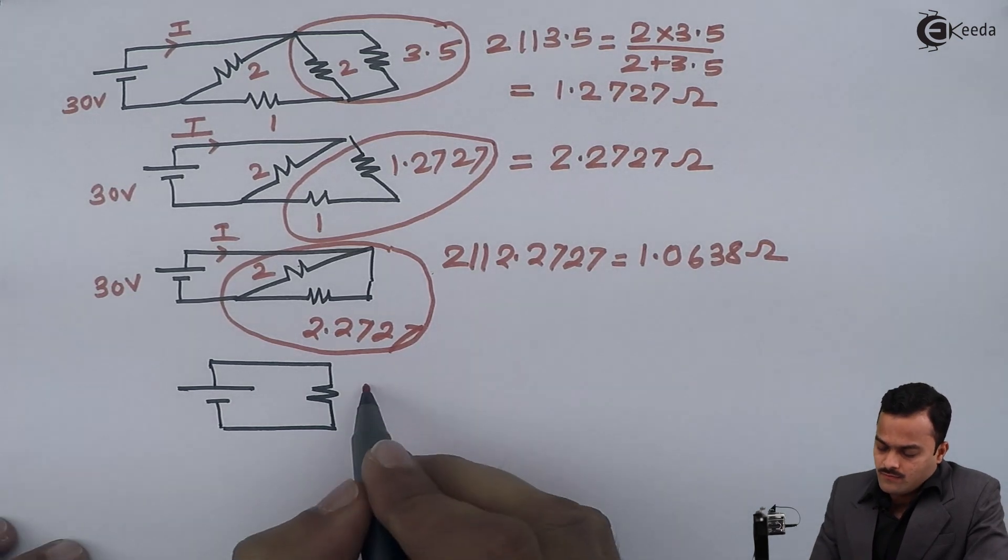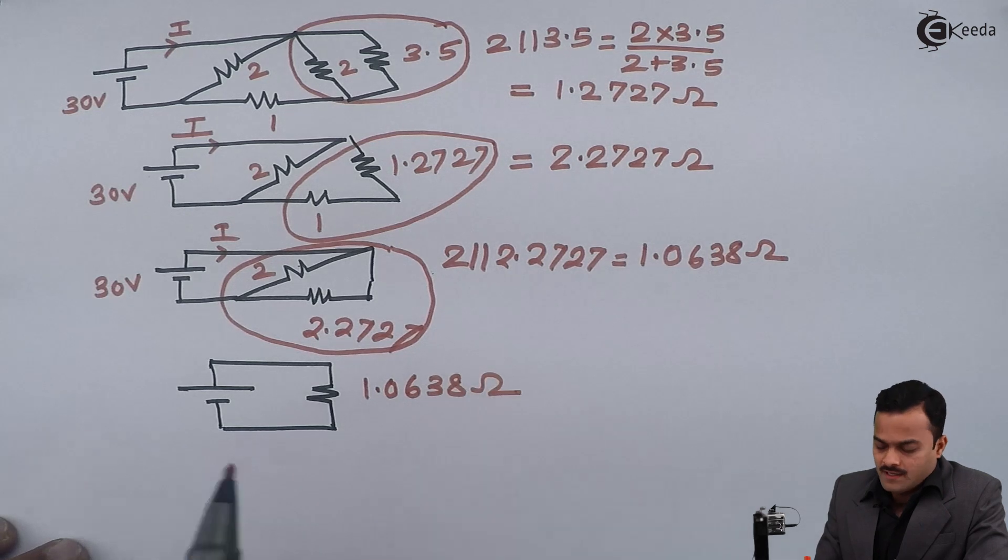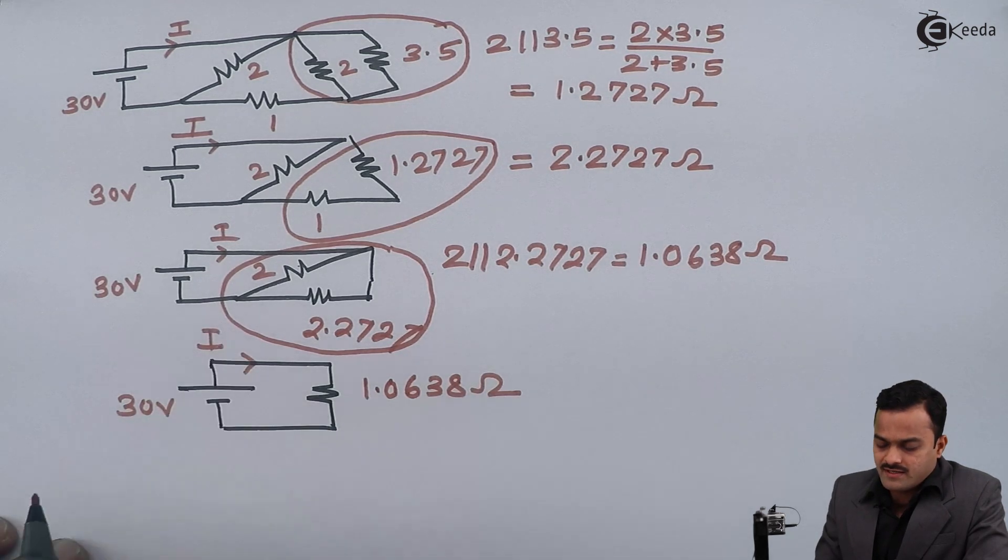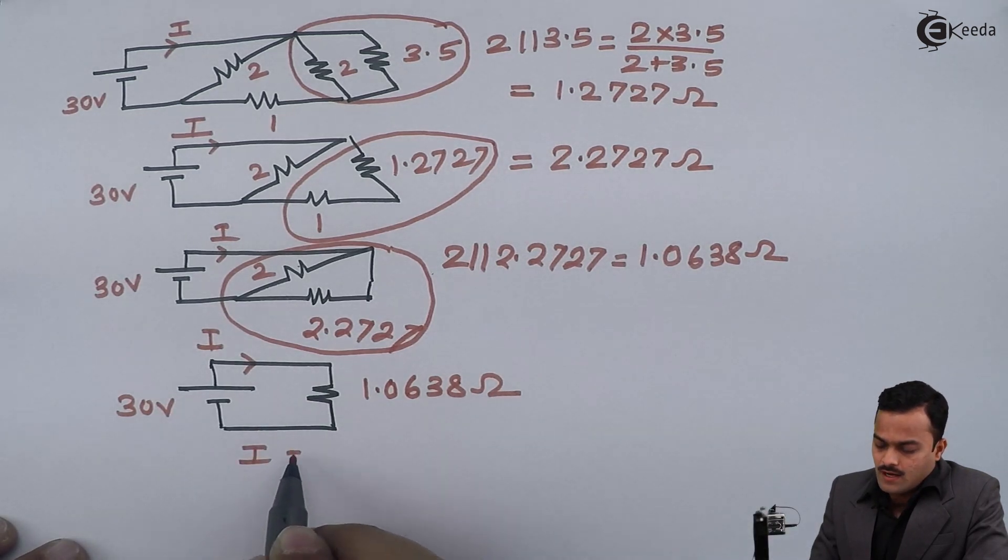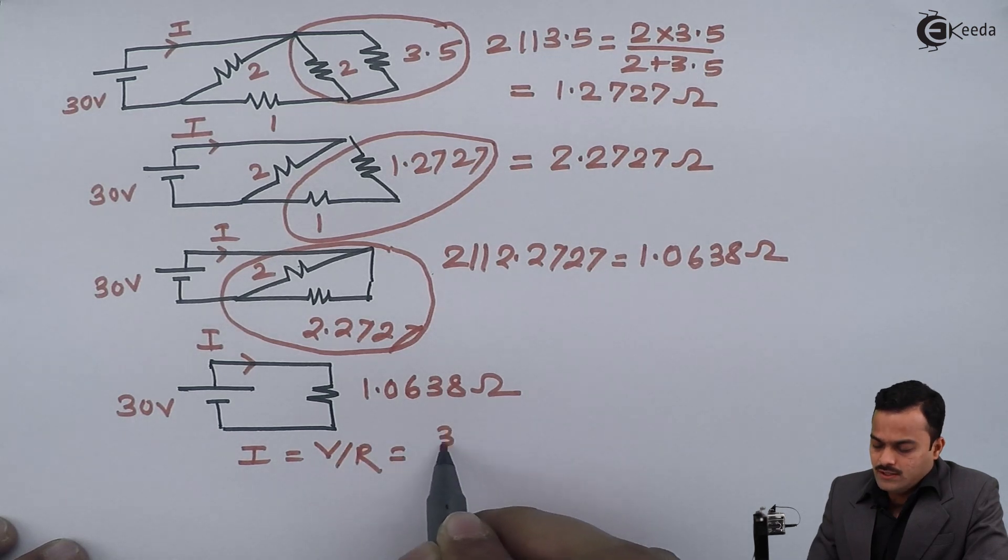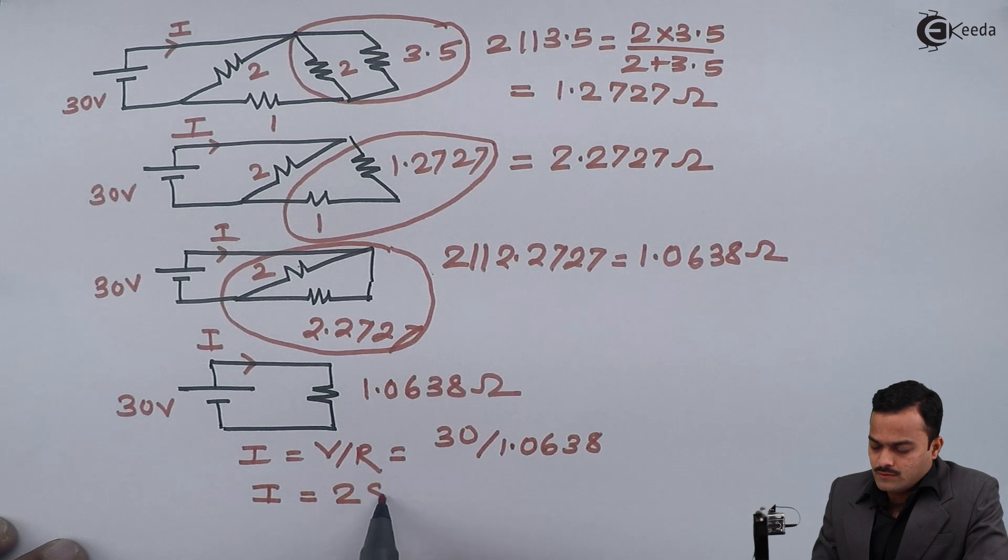By Ohm's law I can say I is V by R, so 30 divided by 1.0638. So finally the current given by the battery is 28.2 amperes.